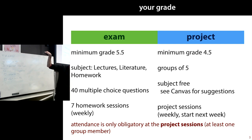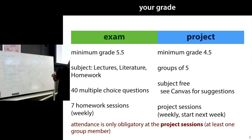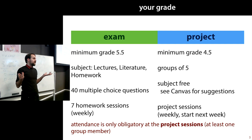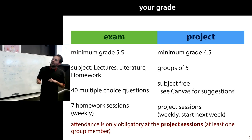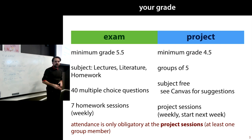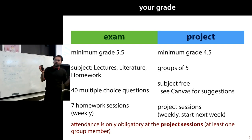The project grade is a group project — you'll make groups of five people. You can choose your own subject; there are some suggestions on Canvas. Weekly project sessions start next week. Attendance is obligatory almost nowhere — you don't have to show up for lectures. In fact, the lectures are recorded and will be put on YouTube, so if you have a busy life you can just watch them there.